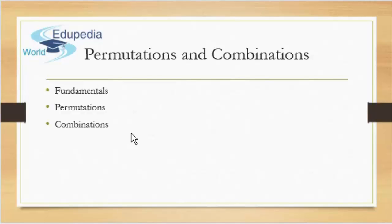Permutations and combinations is a really fun topic because you'll see how it relates to real life. Till now, coordinate geometry, linear inequalities, and complex numbers are things you'll use in exams, physics, and engineering. But for real-life scenarios — like finding combinations of different vegetables, finding combinations of how to arrange students in a class — that's where permutation and combinations come in handy. For example, if there are six chairs and three male and three female students, how are you supposed to find the best arrangement? These everyday questions will be solved by permutations and combinations.